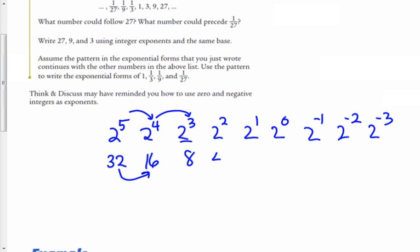So 8 divided by 2 is 4. 4 divided by 2 is 2. 2 divided by 2 is 1. 1 divided by 2 is 0.5 or as a fraction is 1 half. 1 half divided by 2, half of a half basically is 1 fourth or 0.25 as a decimal. And if I divide that by 2, I get 1 eighth.